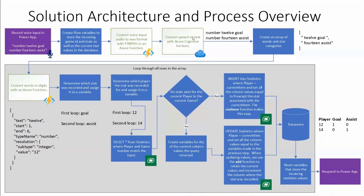The reason we convert to WAV is because Azure Cognitive Services will take that WAV file and turn that speech into text. At this point, we said 'number 12 goal, number 14 assist' — and it's exactly what we're getting back from Cognitive Services. We then split this into an array, splitting on the word 'number,' which gives us exactly what our stats are and which player recorded them in the shape of an array. Matt and I sat around for hours trying to figure out the right way to do this and get to the point where we could iterate through it.